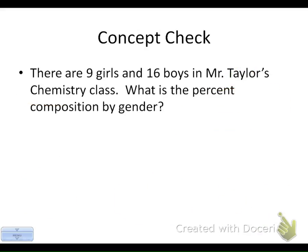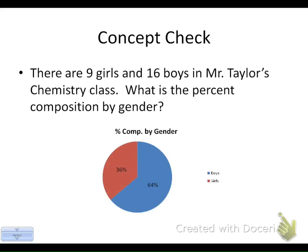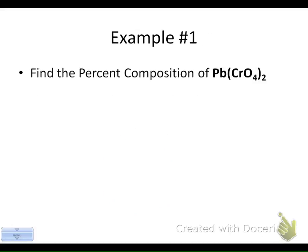Let's do a concept check first. There are 9 girls and 16 boys in Mr. Taylor's chemistry class. What is the percent composition by gender? So out of 25, 64% are boys. 36% are girls. That's 16 over 25, and 9 over 25.